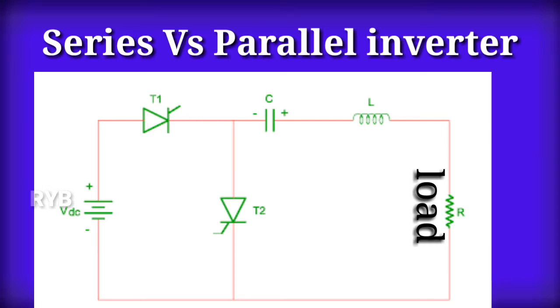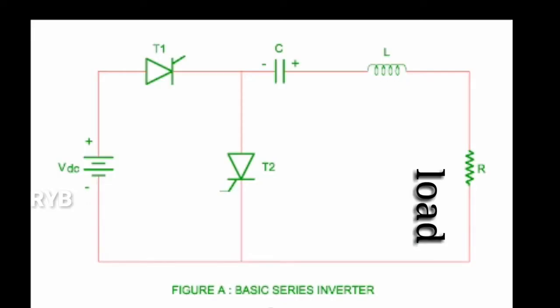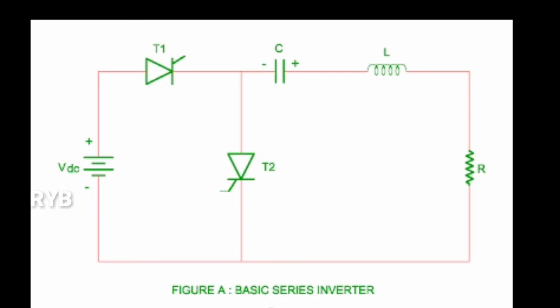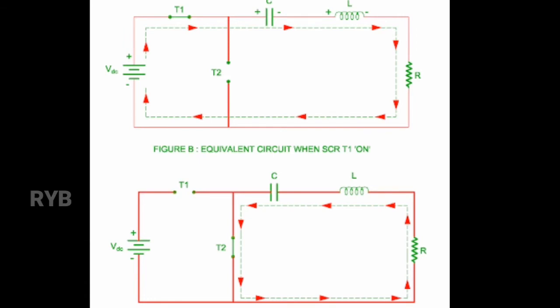These inverters operate at high frequencies, from 200 Hz to 100 kHz. In the basic series inverter, inductance L and capacitance C are connected in series with the load. The values of L and C are chosen such that the series RLC circuit forms an underdamped circuit. Two thyristors T1 and T2 are turned on appropriately so that an output voltage of the desired frequency is obtained. By switching thyristors T1 and T2 we obtain variable AC frequency at different levels.